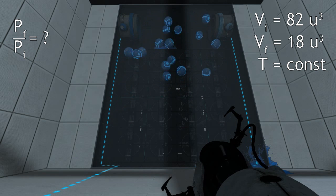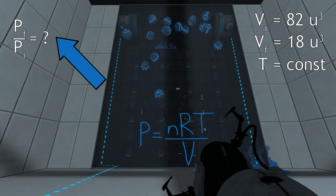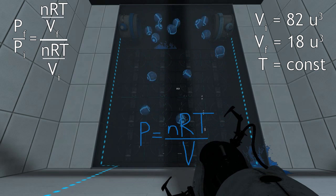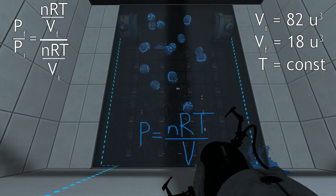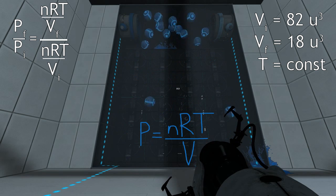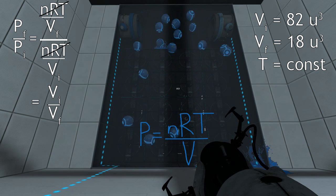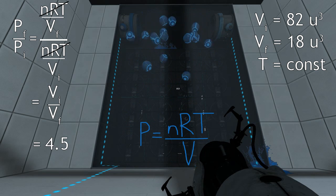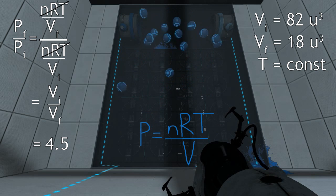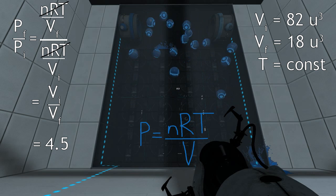To find the factor by which the pressures increase, we'll be doing the final pressure divided by the initial pressure. If we plug in, we find that NRT is being divided by NRT. Given that N, R, and T are all constants, NRT divided by NRT cancels out, and we're left with the initial volume divided by the final volume. That gives us 4.5 — in other words, the pressure of the room has increased by a factor of 4.5 by making the room smaller.